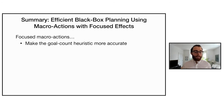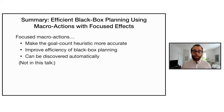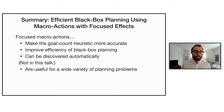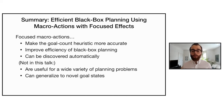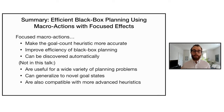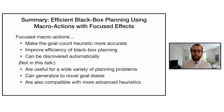To summarize: focused macro actions make the goal count heuristic more accurate, improve the efficiency of black box planning, and can be discovered automatically. Additional findings not covered here include that focused macros are useful for a wide variety of planning problems beyond the Rubik's Cube, that they generalize to novel goal states since goal information is not needed during learning, and that they are compatible with more advanced heuristics incorporating state novelty.